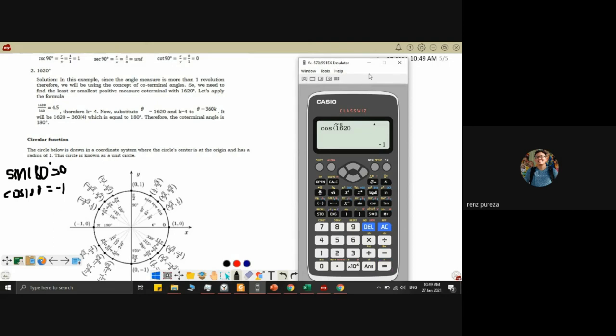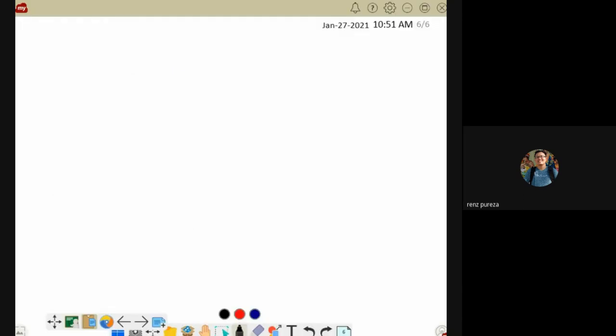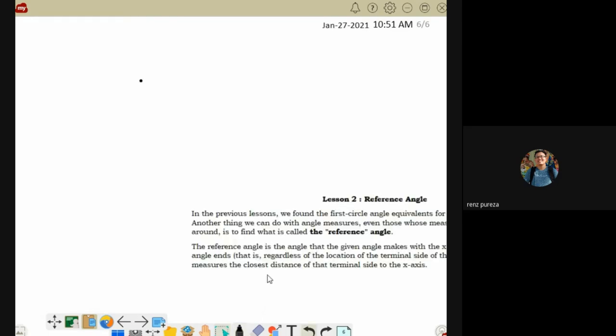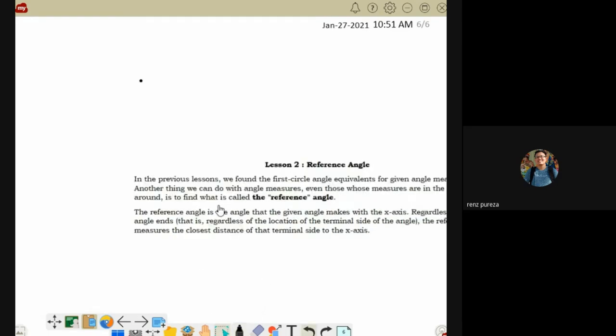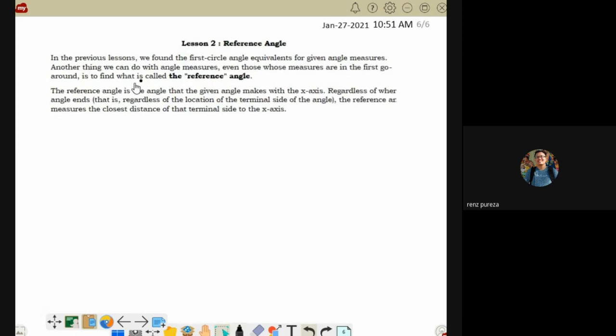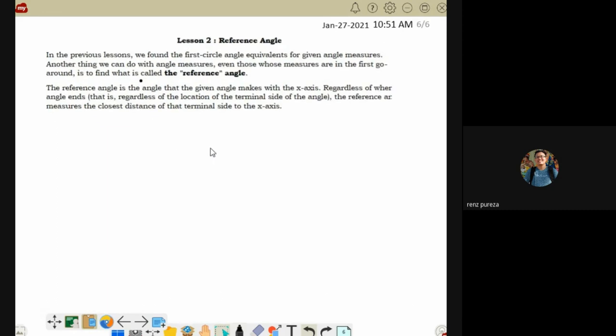So we see the usefulness of coterminal. It just keeps going around in circles. That 1,620, there it is, gives the same answer.